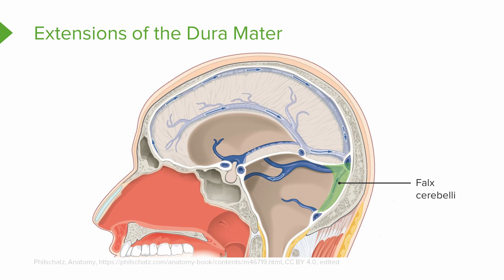The next extension is the falx cerebelli. In this extension, we are going to separate the two hemispheres of the cerebellum. The third extension of the dura mater is the tentorium cerebelli. This extension separates the cerebrum from the cerebellum.